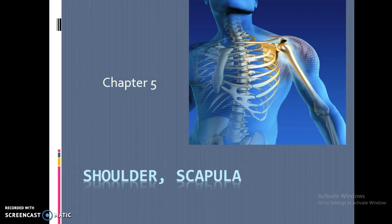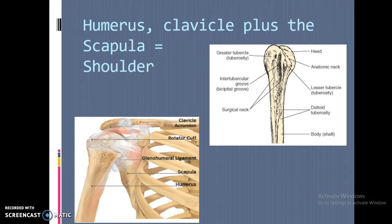We're going to be going over the shoulder and scapula today, with a few more positions to learn. Most of you have probably already started doing shoulder x-rays. This will help you figure out the anatomy and how to correct your mistakes. The shoulder is basically made up of three things: the humerus, the clavicle, and the scapula. Those three bones together make up the shoulder area — the shoulder is not a bone itself, but the influence of those three areas together.